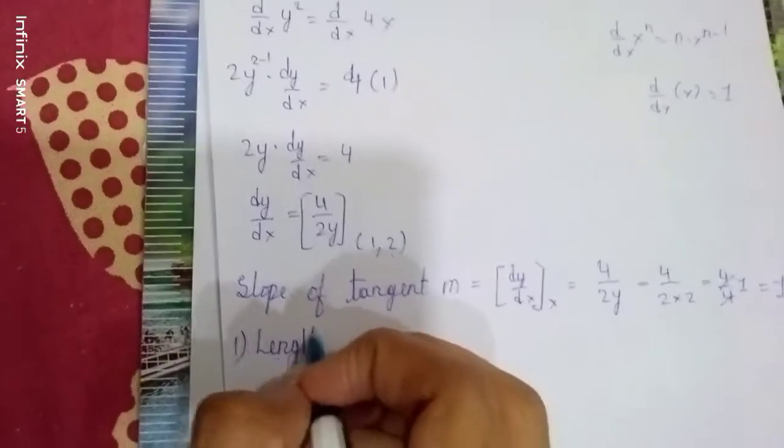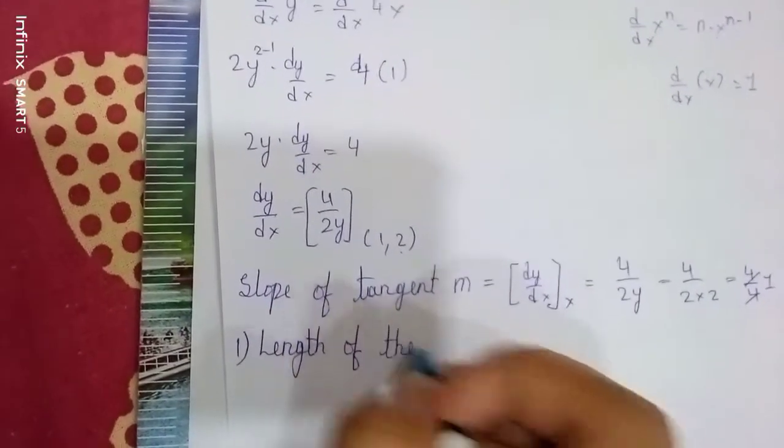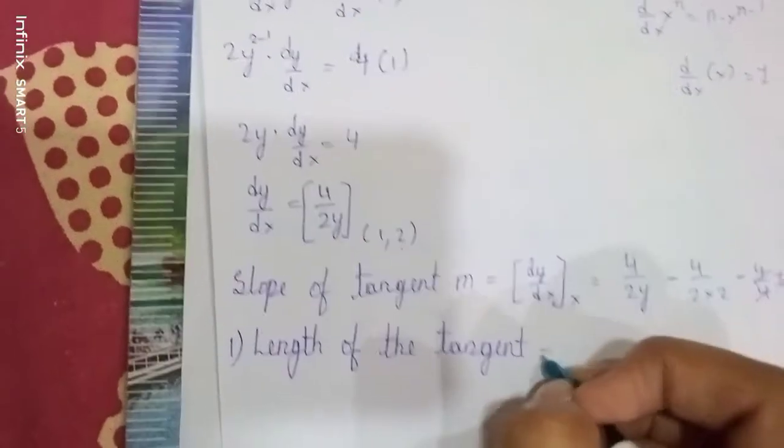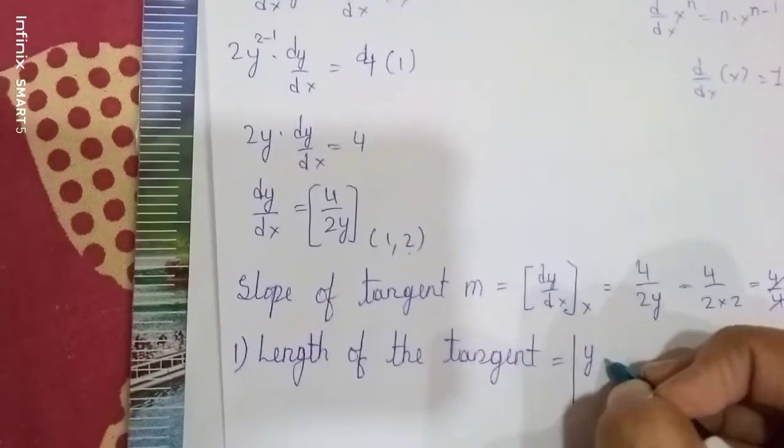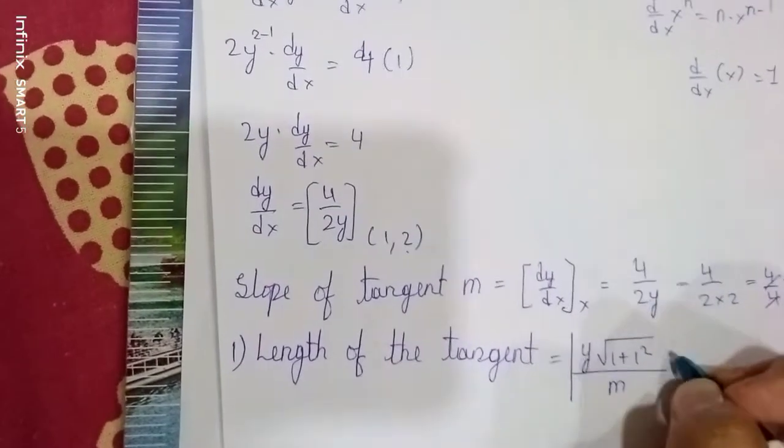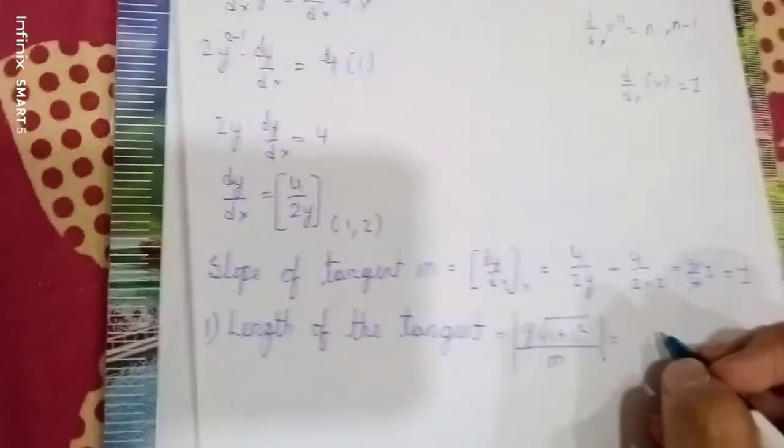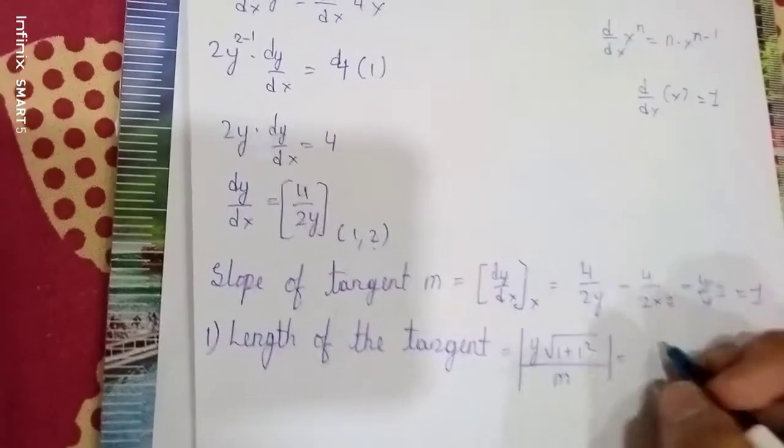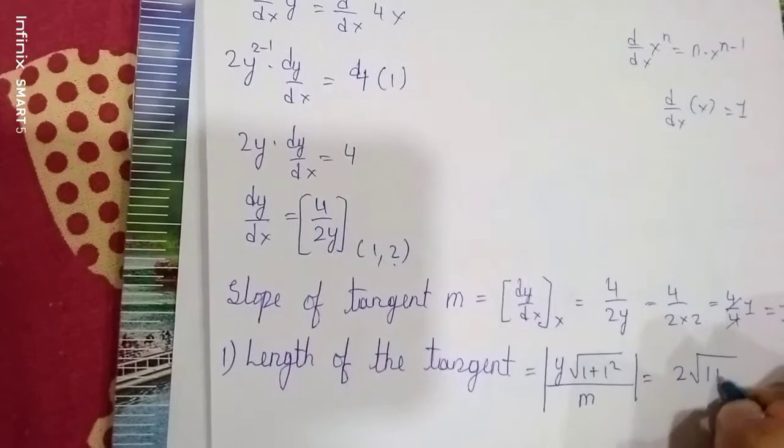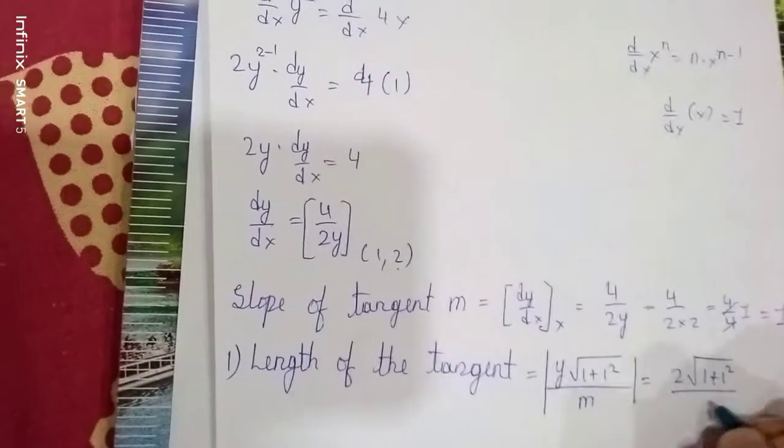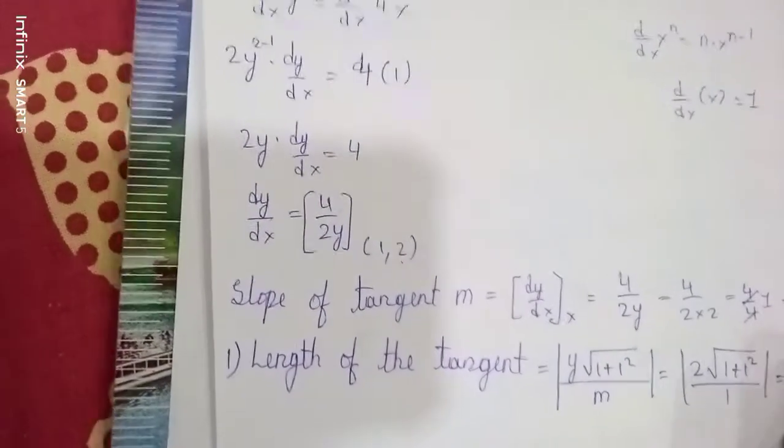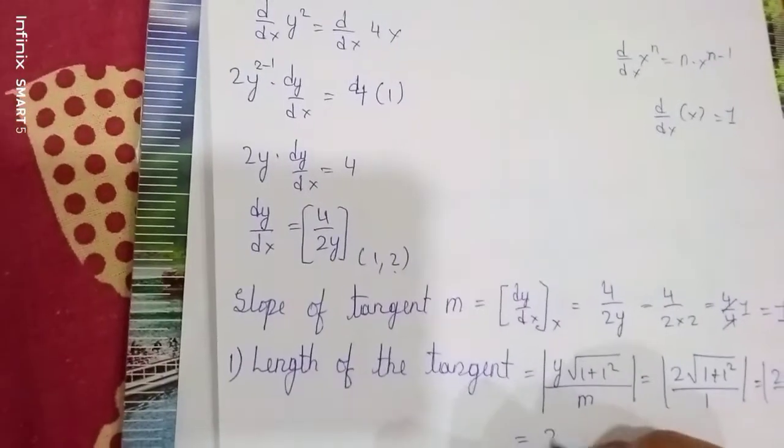Length of the tangent = |y|√(1 + (y/m)²) = |2|√(1 + (2/1)²) = 2√(1+4) = 2√5. Wait, |2|√(1+4)/1 = 2√2.